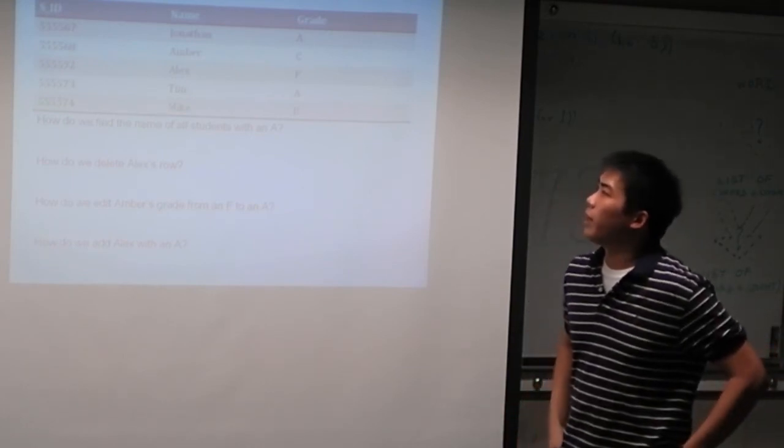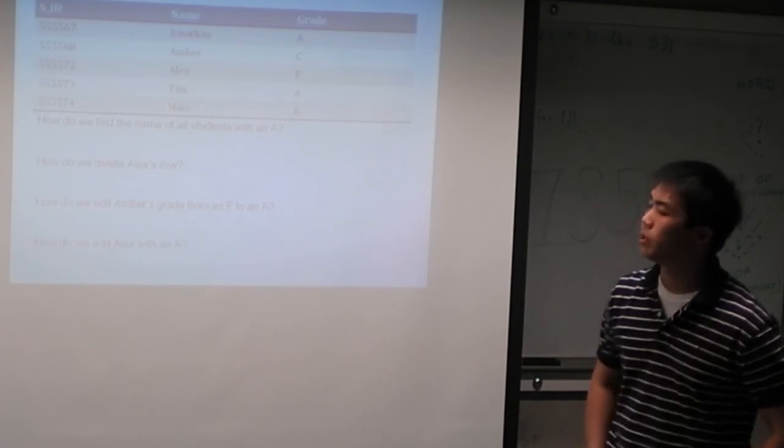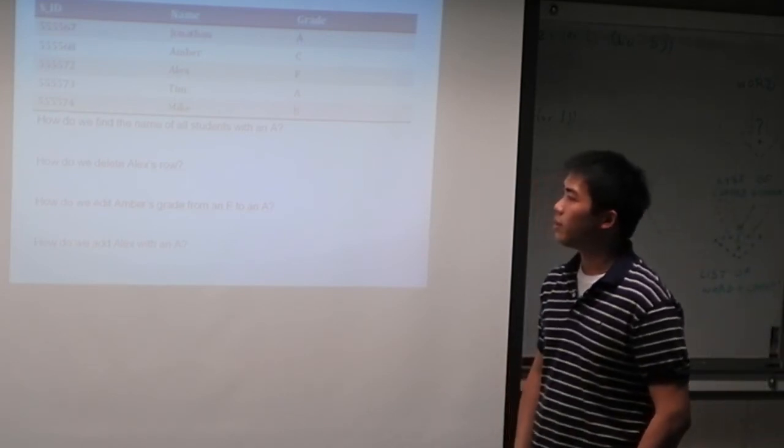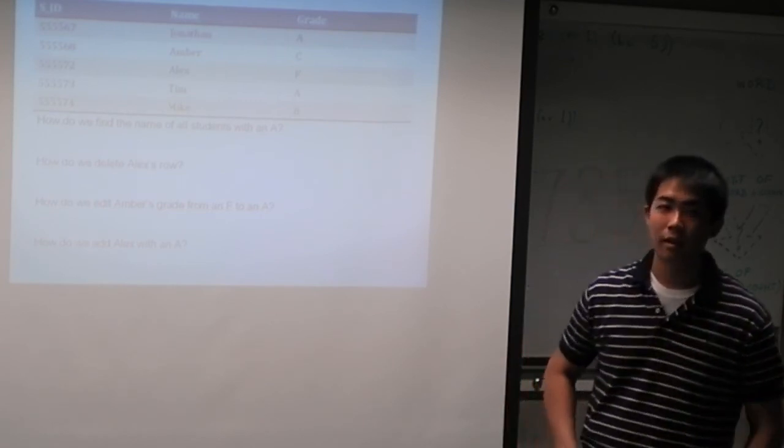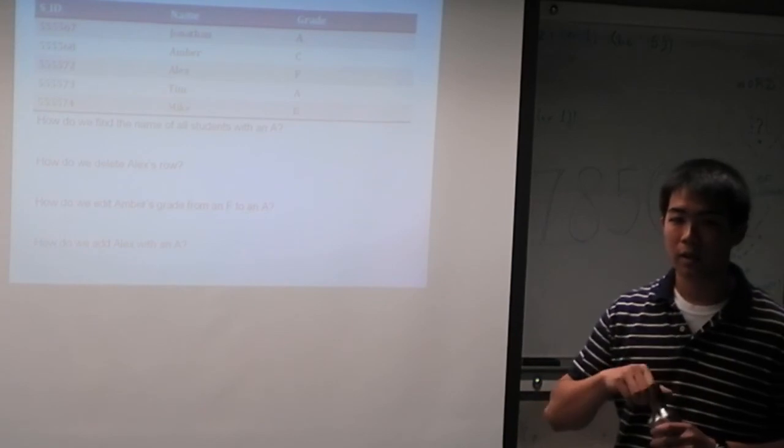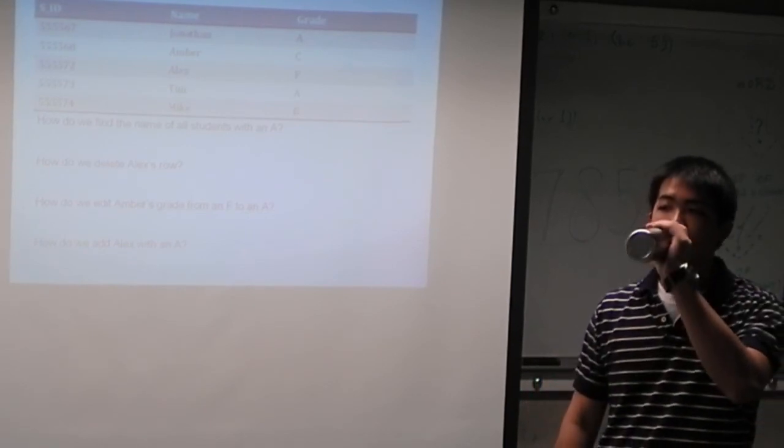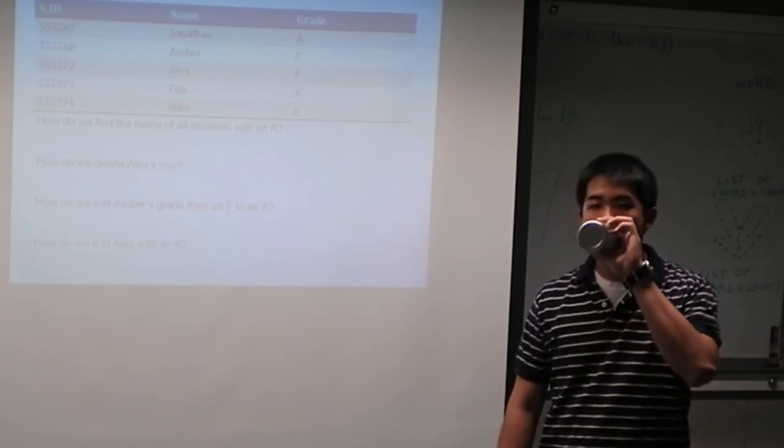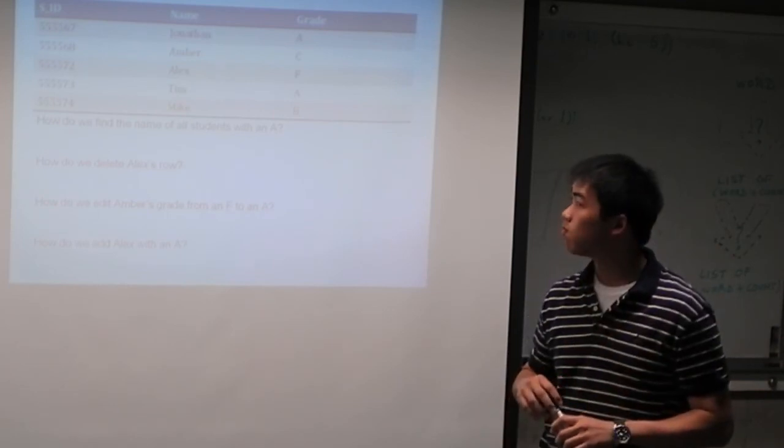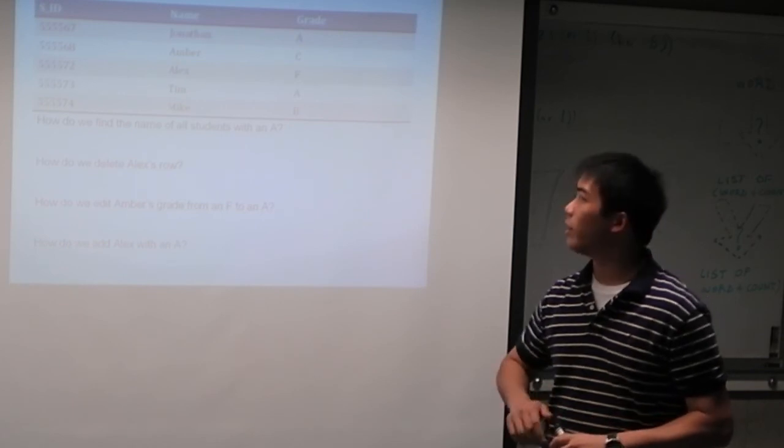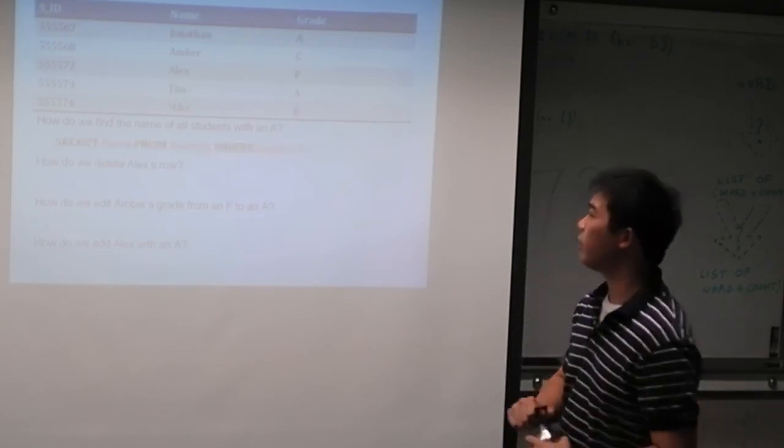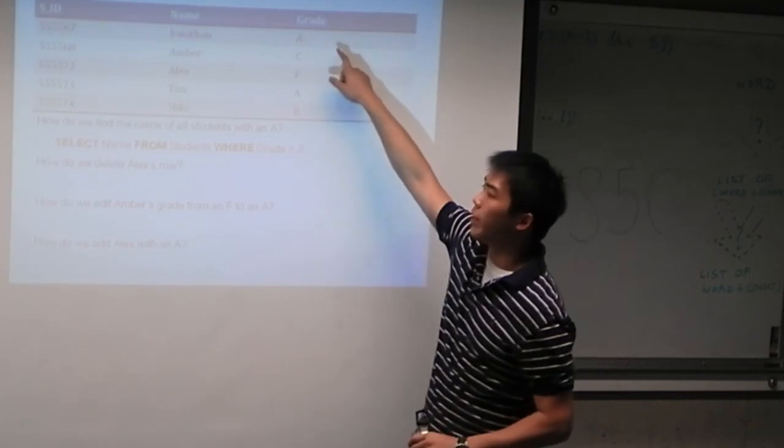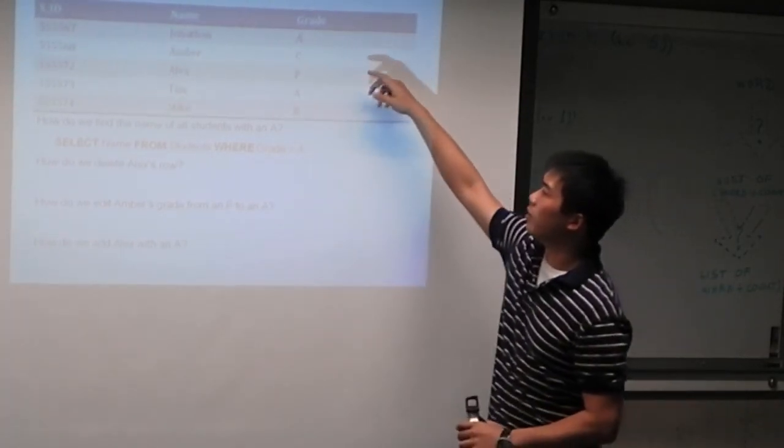So here we have another example, where we have a student's table with student IDs, the name and the grades of the students. So let's start with the first one. How would we find the name of all students with an A? Can someone tell me how we would do that? You have to select the name from the student's table subject to the condition where the grade is an A. Yeah, pretty much. So here we select the name column from students, which is the name of the table, where the grade is equal to an A. And in this case, it'll spit out the names Jonathan and Tim.